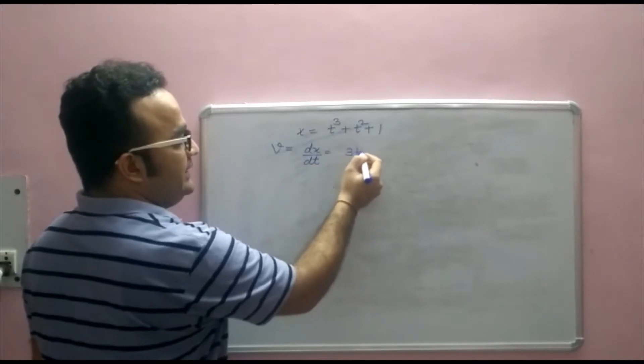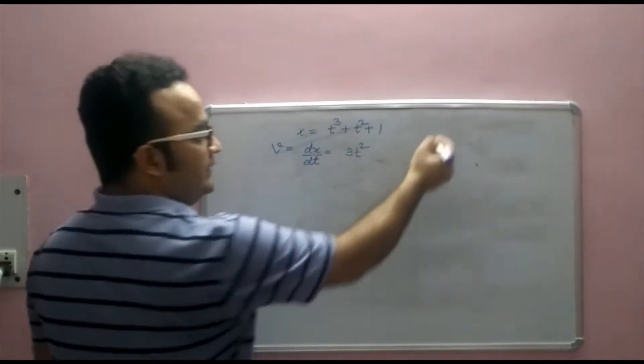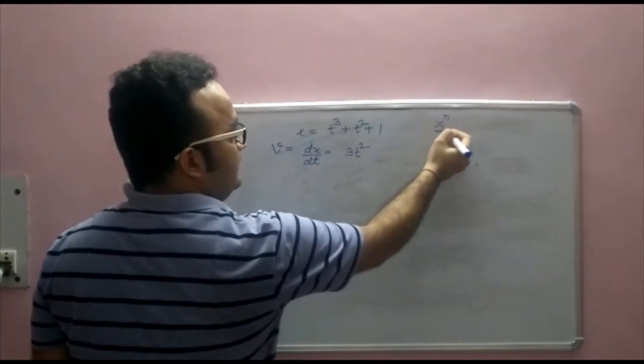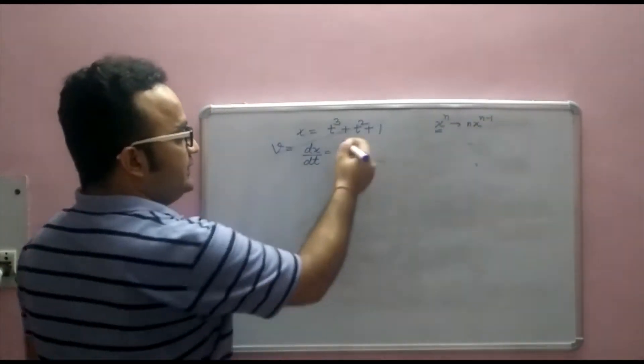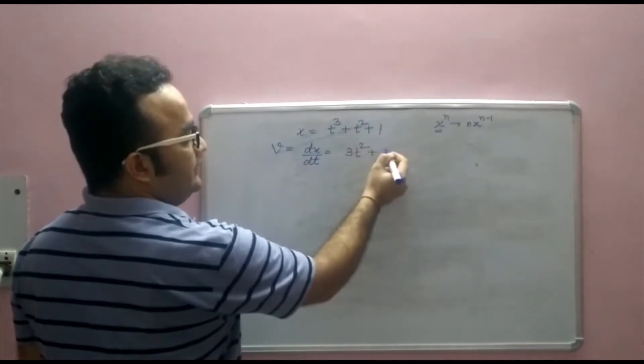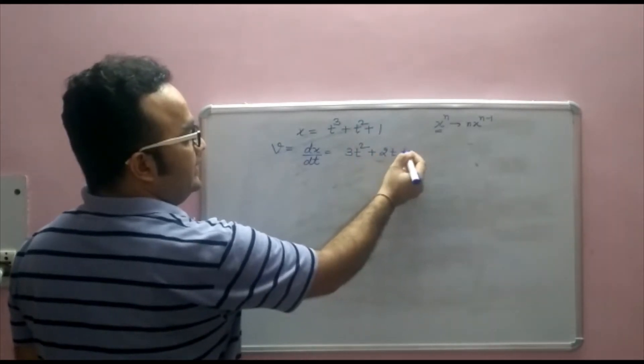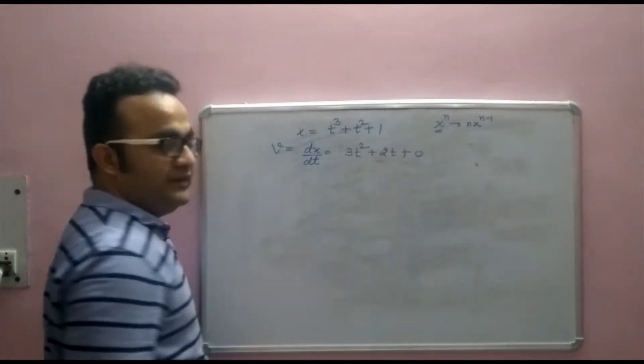you get 3t square because we know the formula. If x to the power n is given, the differentiation of it is n x to the power n minus 1. So here we get 3t square and the differentiation of t square is 2t and 1 is constant so the differentiation is 0.